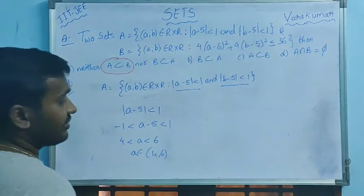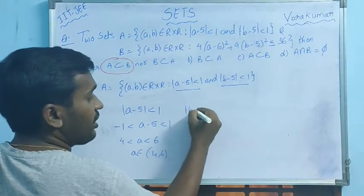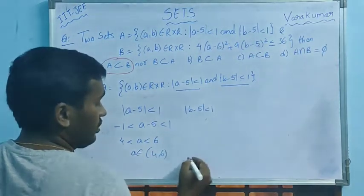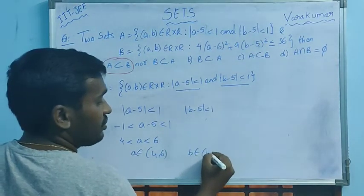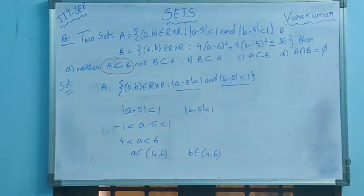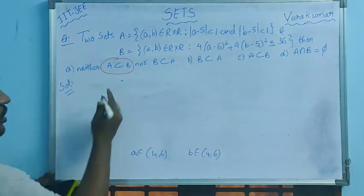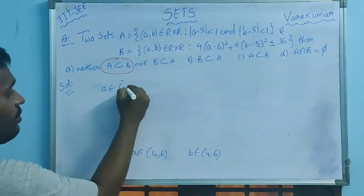Similarly b also the same thing, so modulus b minus 5 less than 1, so b also belongs to (4,6). So we got the value: a set A value and b value. So now I'm going to write that: a belongs to (4,6) and b belongs to (4,6).